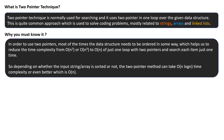Depending on whether the input string or array is sorted or not, the two pointer method can take O(n log n) time. If the input is not sorted, you may have to sort it explicitly before applying this technique, so the sorting will take O(n log n). But if the input is already ordered, the complexity will drastically reduce to O(n). So if your data structure — array or linked list — is already sorted, you can use this algorithm to reduce your complexity.